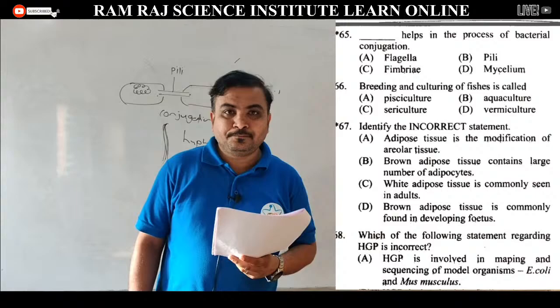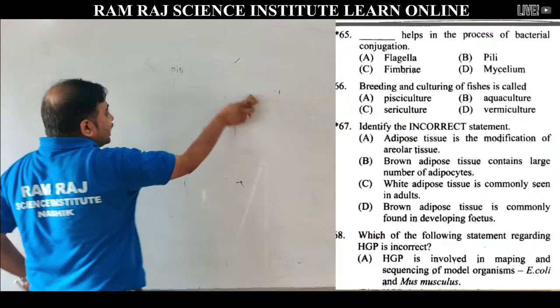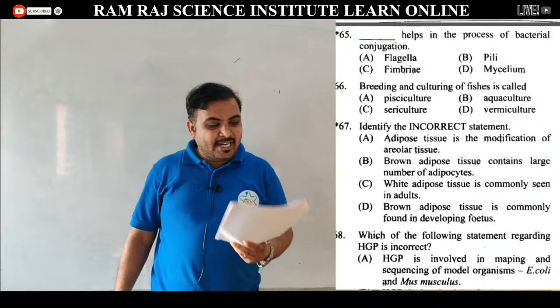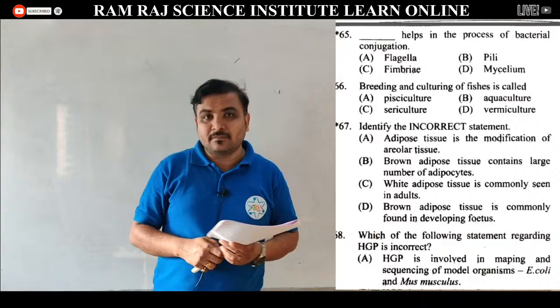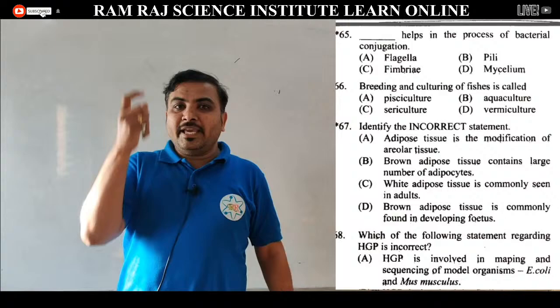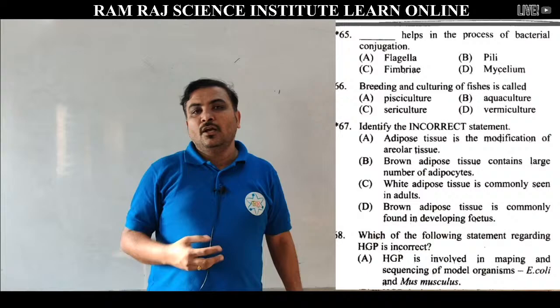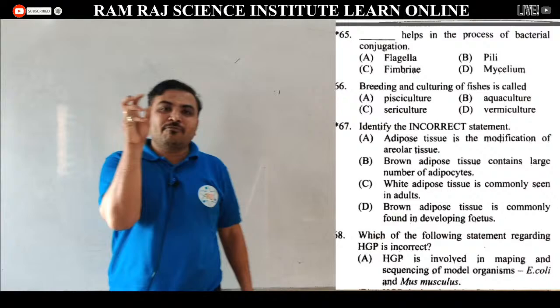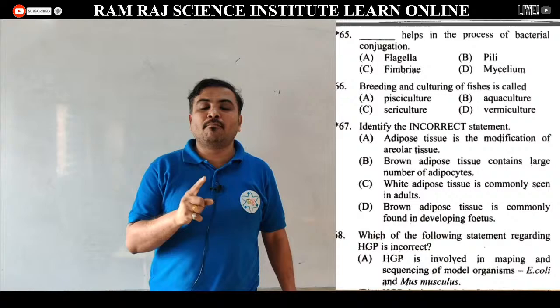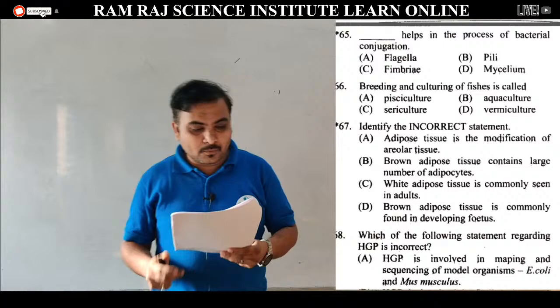Question 67: identify the incorrect statement. Adipose tissue is a modification of areolar tissue — correct statement. Areolar tissue modify होके adipose tissue बनती है क्योंकि areolar tissue में fat cells, fibroblasts, macrophages, mast cells, white और yellow fibers होते हैं. अगर सिर्फ matrix और fat cells बचें तो adipose tissue बन जाती है.